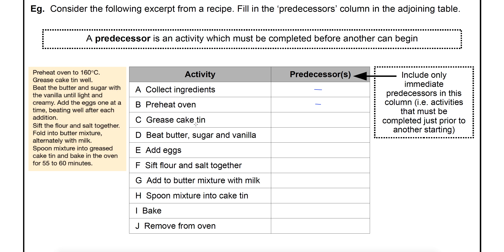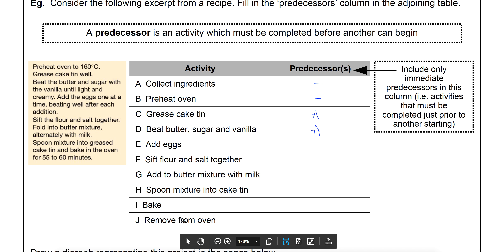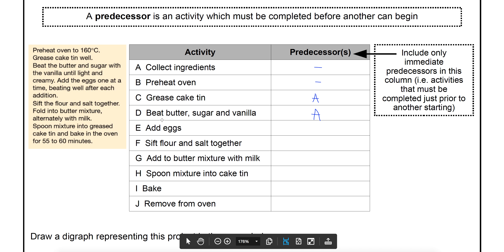The next one is to grease the cake tin. This one has a predecessor because you're going to need something to grease it with — whether it be butter or oil. So you'll have needed to collect your ingredients before you do that, meaning A is listed as a predecessor. Likewise, activity D — beating the butter, sugar, and vanilla — can't be done until you've collected the ingredients, so A is its predecessor too. C and D can be done at different times and are not predecessors of each other. Adding the eggs (E) requires D to be completed first, so its predecessor is D.